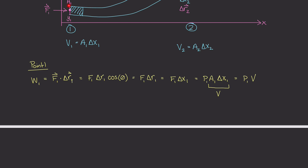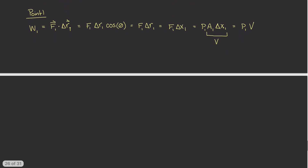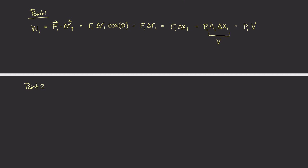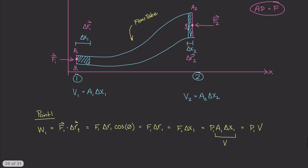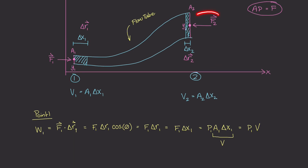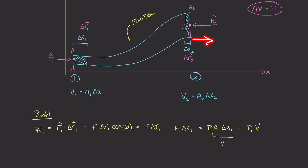So the external work at point one is pressure at one times volume — this volume right here. Now let's look at point two. The work at point two is the external work done by force F2. Just like work one, it's the dot product of F2 and delta R2. But here, F2 is acting to the left while the displacement vector is acting to the right.